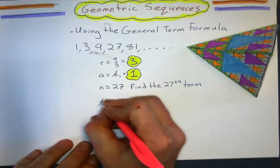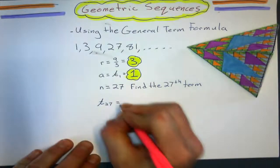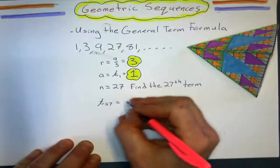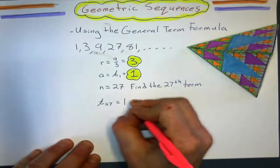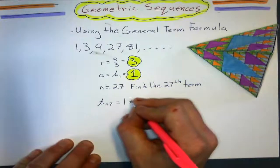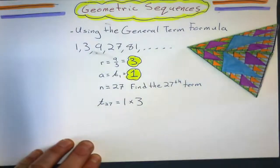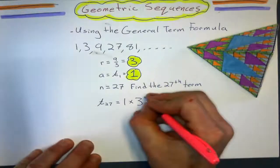So I know that the 27th term is going to be the first term, 1, times the common ratio, what was the common ratio? So 3, repeated 26 more times.